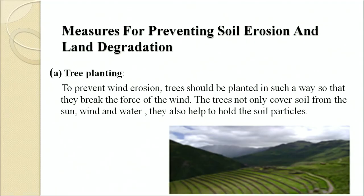Measures for preventing soil erosion and land degradation: tree planting — to prevent wind erosion, trees should be planted so that they break the force of the wind. Trees not only cover soil from sun, wind or water but also help to hold soil particles together.